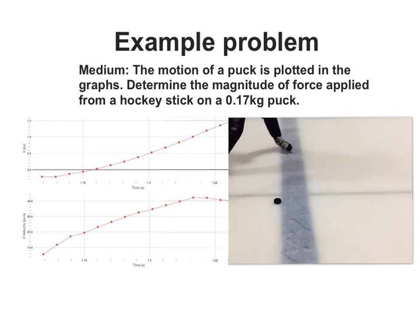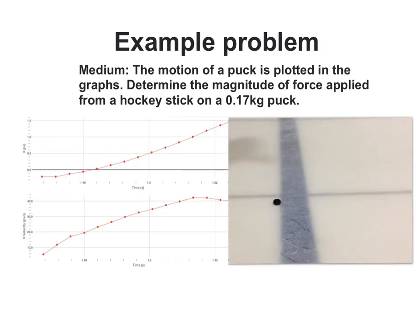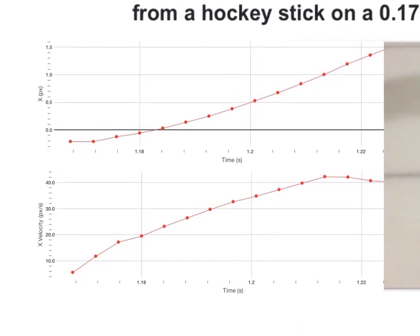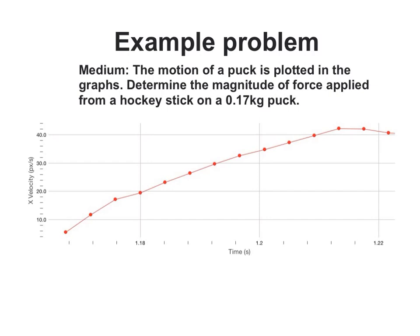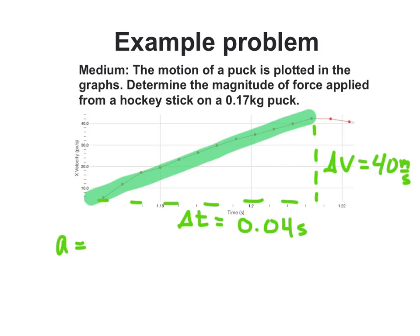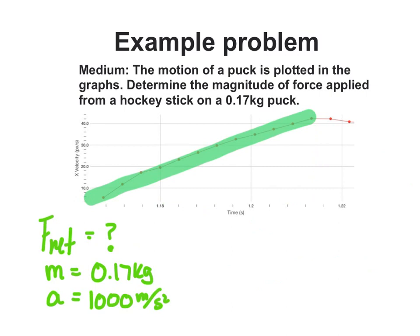Chances are you won't get off the hook that easy and get two out of the three variables right off the bat, but you will get avenues to obtain them. For example, in this graph, we have a way of getting acceleration. The definition of acceleration is change in velocity divided by change in time, so the velocity versus time graph is the one we need because its slope will give us the acceleration. We can approximate a linear relationship for the time in which the puck was in contact with the stick. So our acceleration becomes 1000 meters per second squared, or 100 g's. Now we have two out of the three variables. Net force equals mass times acceleration. Plug in our values and we get 170 newtons.